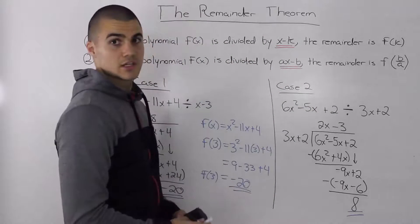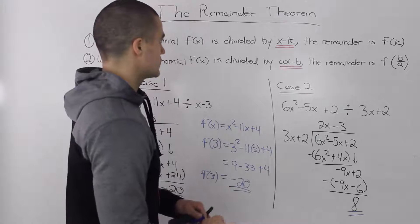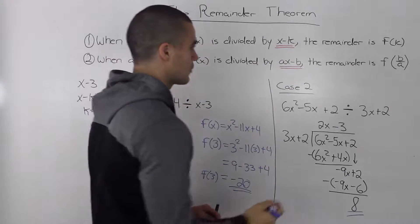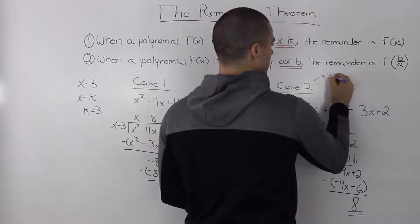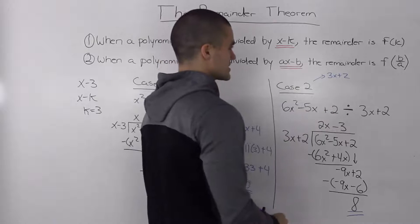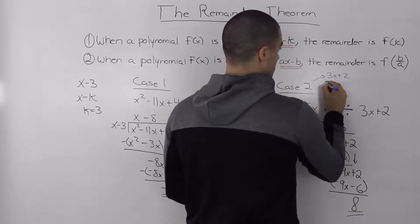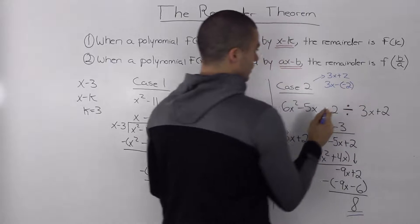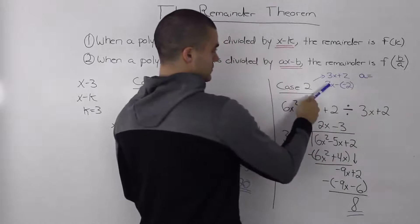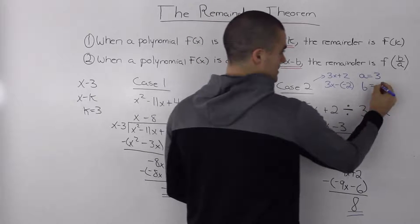Now what if we wanted to use the remainder theorem to find that remainder of 8 instead of doing all this long division? Well, first we've got to find out what case we're dealing with, whether our divisor is in the x minus k form or the ax minus b form. The divisor we're working with is 3x plus 2 and it's closest to this ax minus b form. There's a constant in front which represents this a. However, it's in an ax plus b form. So we could manipulate this divisor by rewriting it like 3x minus negative 2. So now it's in the ax minus b form. Our a value is what's in front of the x, so the 3. And our b value is what we're subtracting, so this negative 2.